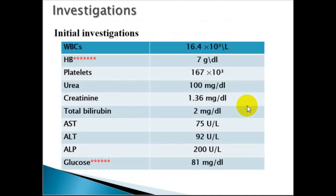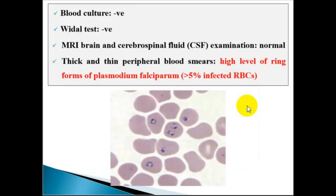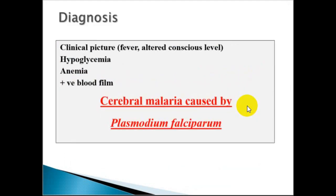On investigation, the hemoglobin was 7 g/dL and there was mild hypoglycemia. Blood culture was negative, viral tests were negative, and MRI brain and CSF examination were normal. The blood smear showed ring forms of Plasmodium falciparum with more than 5% of infected red blood cells. The diagnosis moves to cerebral malaria.